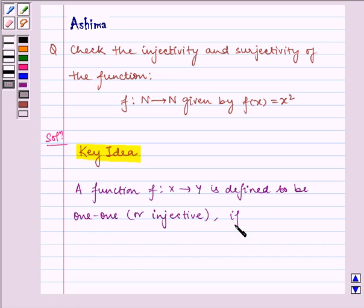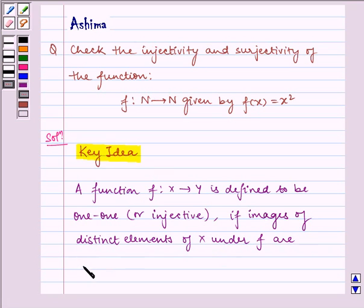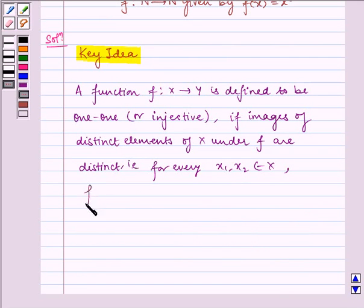if images of distinct elements of X under f are distinct. That is, for every x₁, x₂ belongs to X, f(x₁) = f(x₂) implies x₁ = x₂.